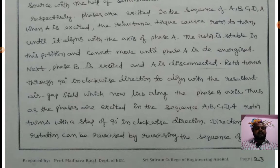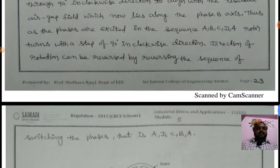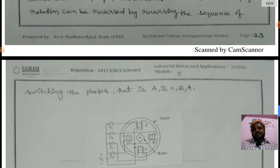Rotor turns through 90 degrees in clockwise direction to align with the resultant air gap field which now lies along the phase B axis. Thus, as the phases are excited in the sequence A, B, C, D, A, rotor turns with a step of 90 degrees in clockwise direction. Direction of rotation can be reversed by reversing the sequence of switching the phases, that is A, D, C, B, A.